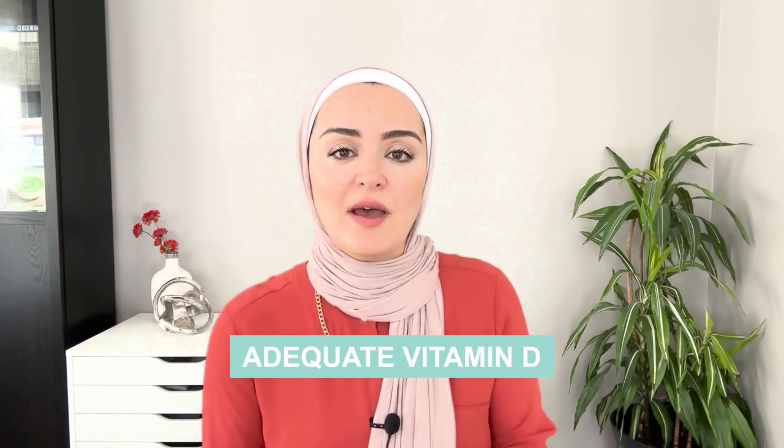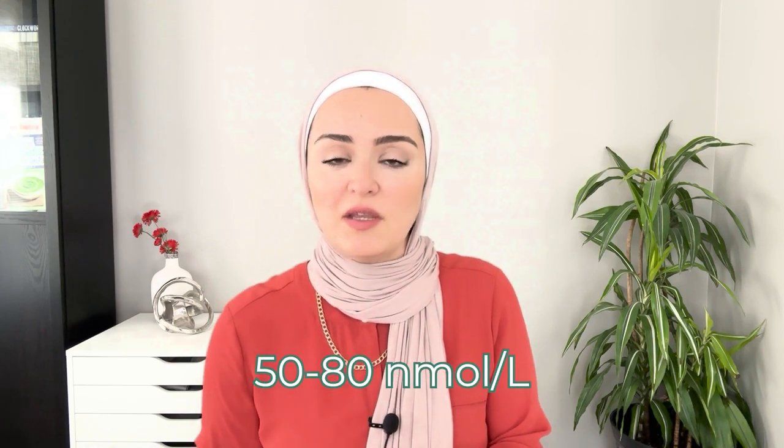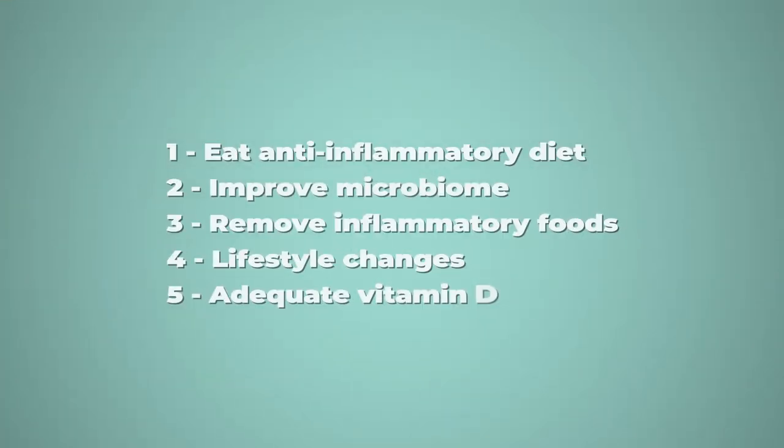The last thing that should be easily accessible is getting your vitamin D tested. Ask your doctor to check your level. Even though deficiency is considered 30 or below, at 30 it's not really sufficient. You need your vitamin D level to be between 50 and 80 nanomoles per liter, because vitamin D deficiency has been connected to many autoimmune conditions and vitamin D actually helps regulate and modulate the immune system. So the five things we covered are: anti-inflammatory diet, improving the microbiome, removing gluten, dairy, processed ingredients and sugars, addressing lifestyle, and getting your vitamin D tested.